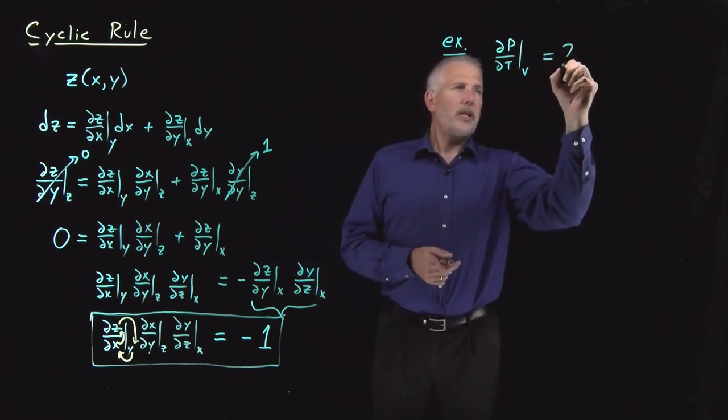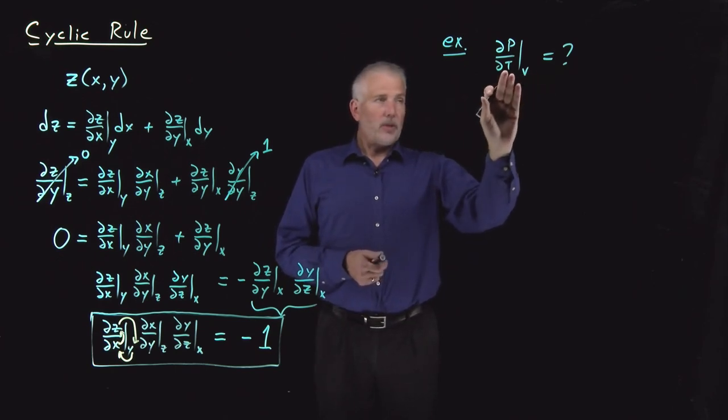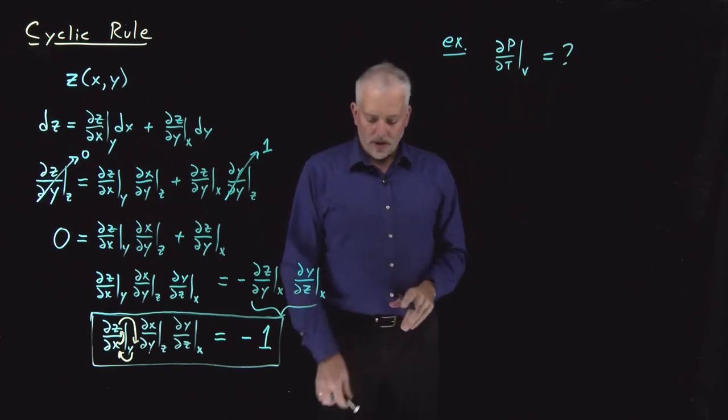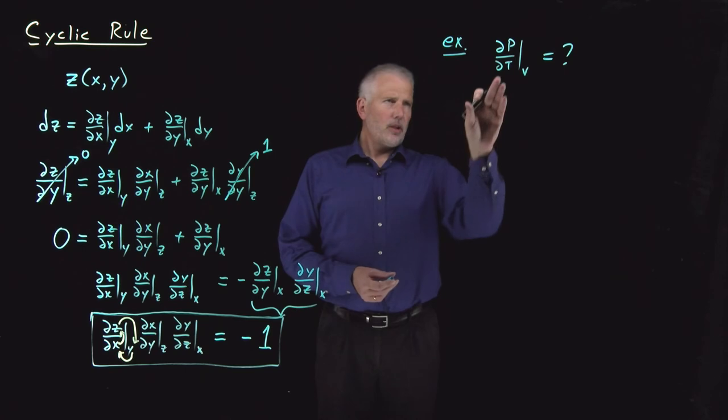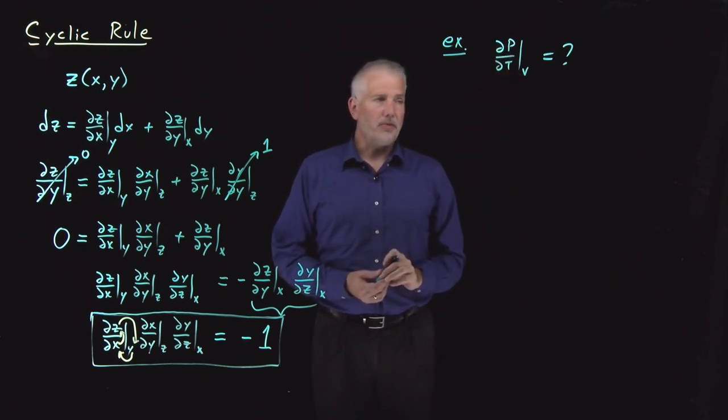So that quantity is not something we know the value of, or we know a relationship for at the moment, not just yet, but it looks familiar. That combination of variables p's and T's and V's is reminiscent of some things we've seen before.